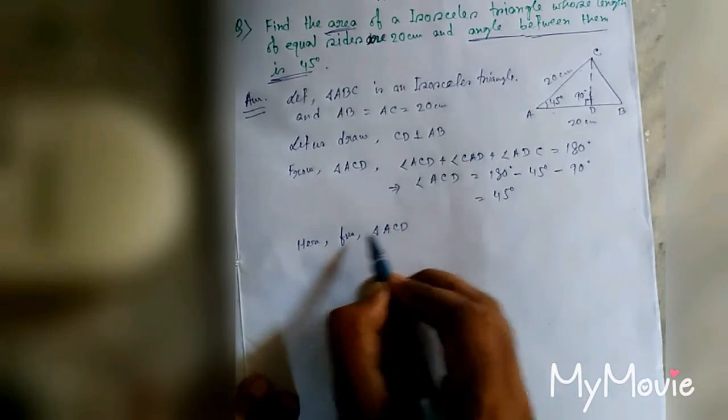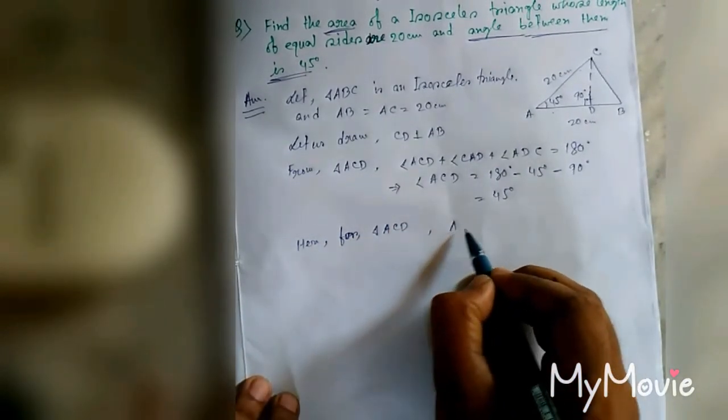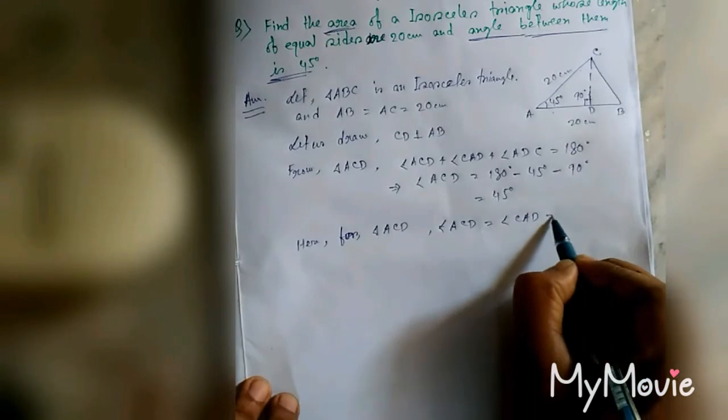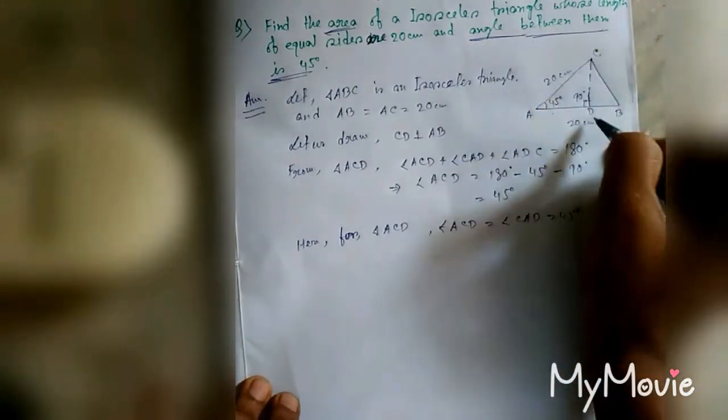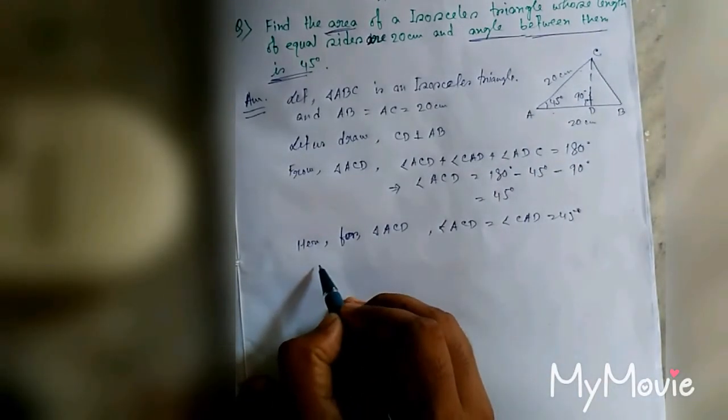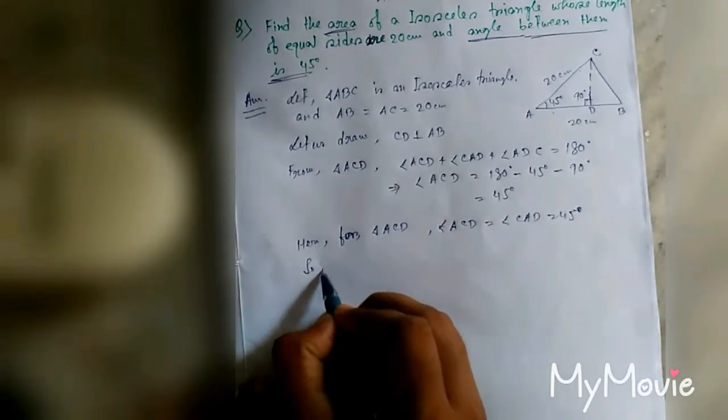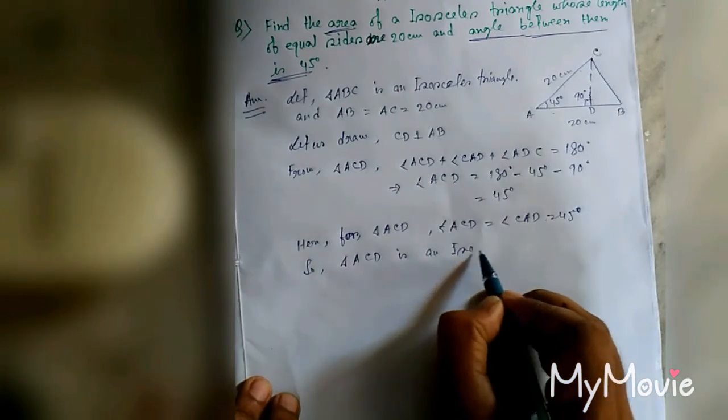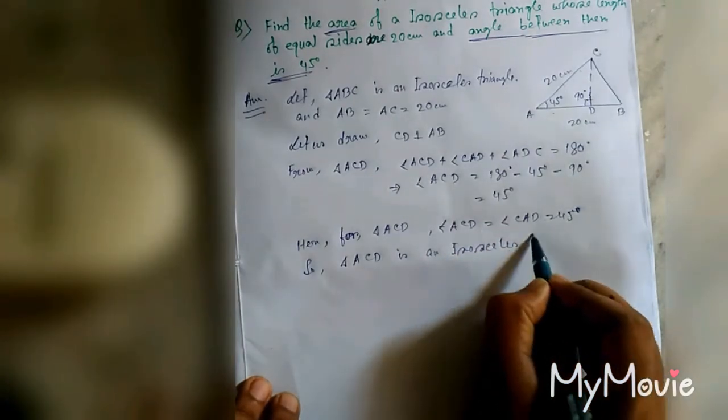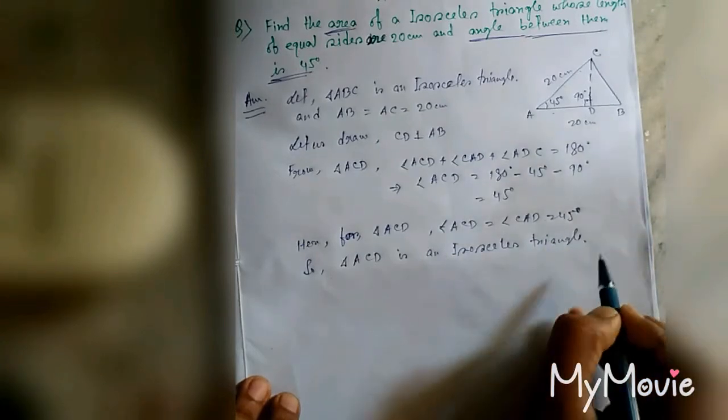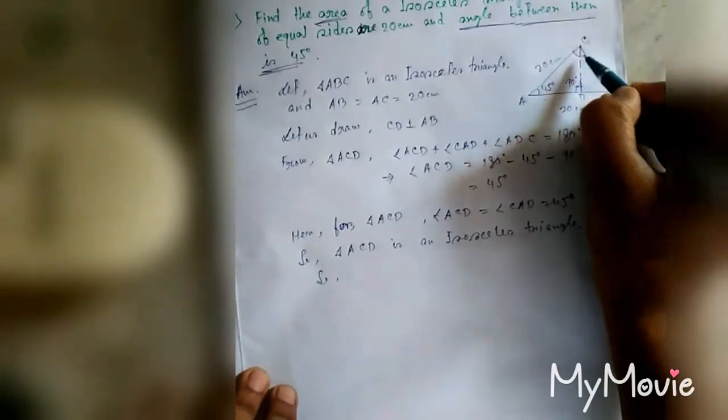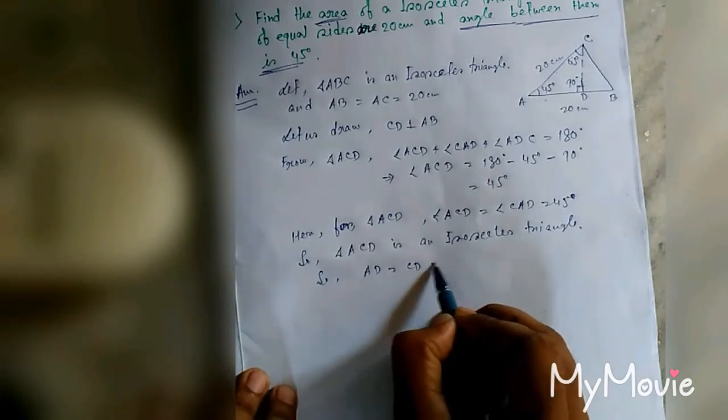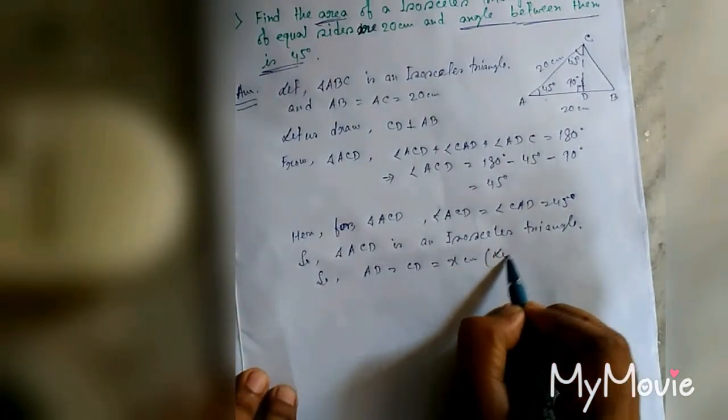For triangle ACD, angle ACD equal to angle CAD, so this triangle ACD is an isosceles triangle. So AD equal to CD equal to x centimeters, assume.